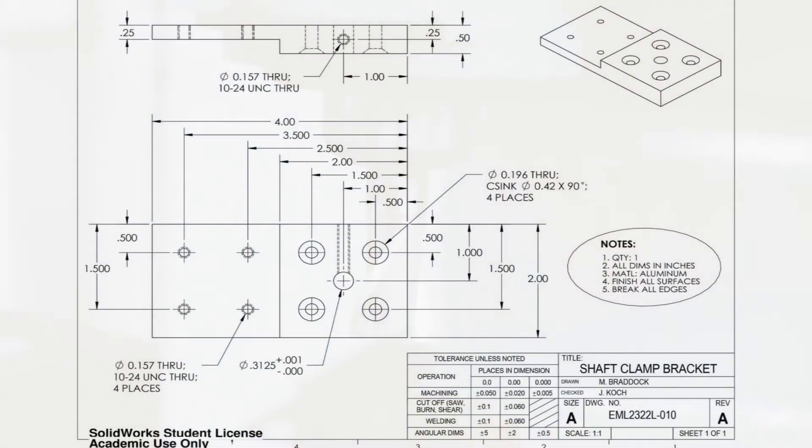Notice that all of the dimensions are referenced off of a single point. Our zero will be located here. Many dimensions have varying degrees of precision. They indicate the tolerance of the specific feature. Look at the number of digits after the decimal point. For this specific feature, we have three digits.